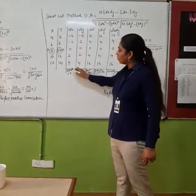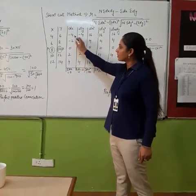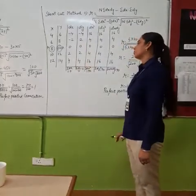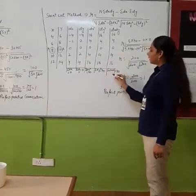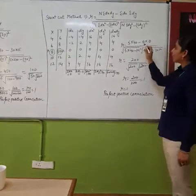So dx total is coming 0 because this is plus 4 and plus 2, this is minus 4 and minus 2 if you get guess. Same way dy total is also 0, dx square is 40, dy square is 40 and dx dy is also 40.